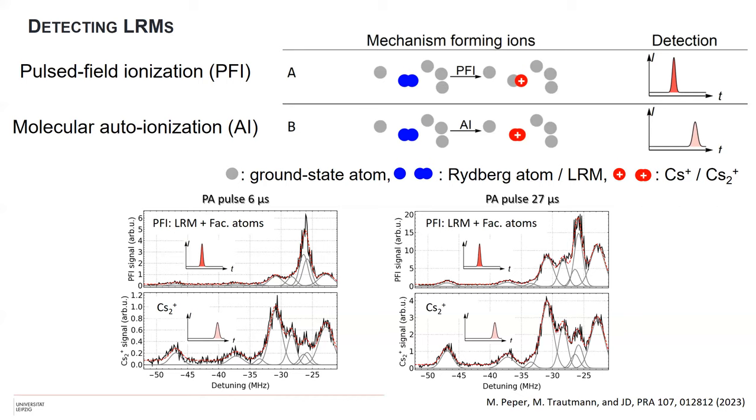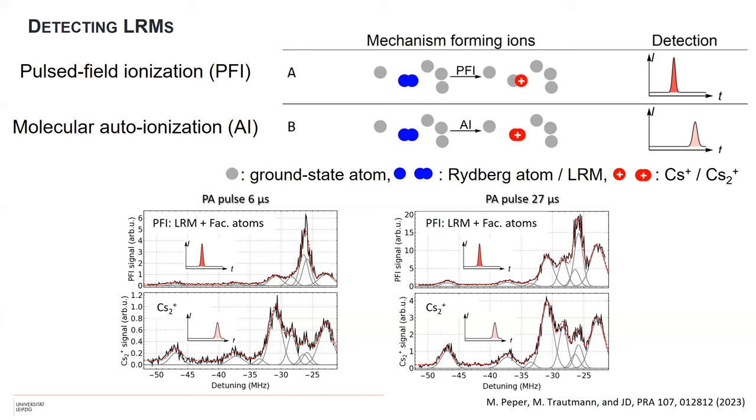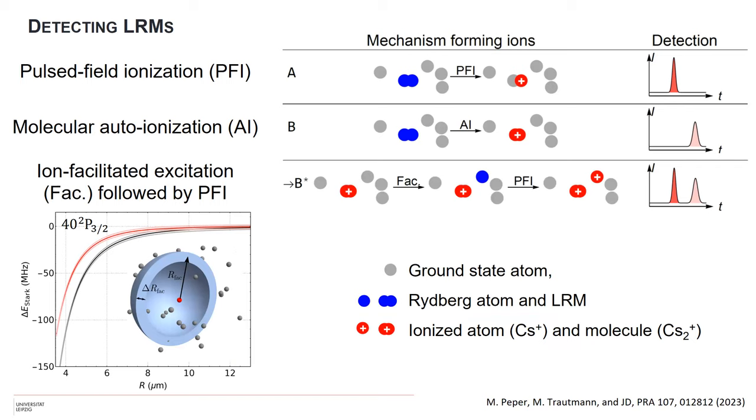We can understand this and extract lifetimes from this. A simple test is to make our pulse longer - instead of 6 microseconds photoassociation pulse, 27 microseconds, a factor of three and a half. This spectrum looks identical - here we go up to one, here up to four, so about three to four times more. But here it looks very different. This strong peak goes from five to eighteen, perfect, but this one goes from one to eight or ten. There's clearly some nonlinearity in that process, which we could identify as ion-facilitated excitation.